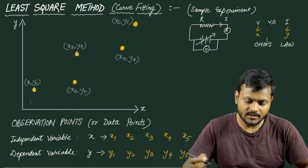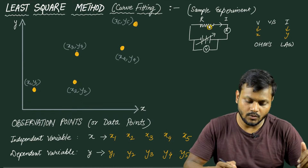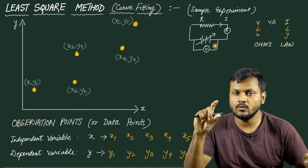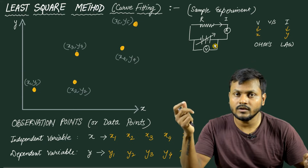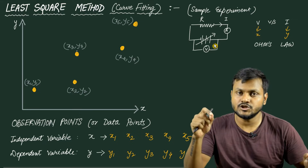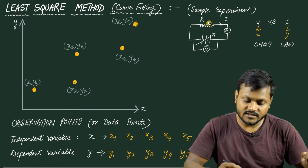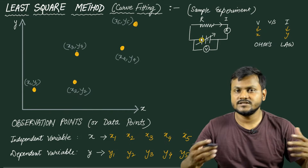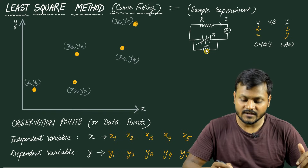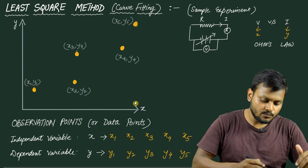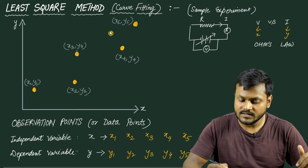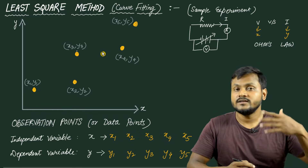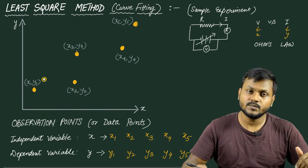Let's suppose that you perform an experiment which involves a resistance connected to a battery and then you change the voltage of the battery. Let's suppose first you take 1 volt, then 2 volt, then 3 volt, and so on, and with each voltage you measure the current. Here in this resistor circuit the ammeter measures the current and the voltmeter measures the voltage. You gather a set of data points by changing voltage and finding the current, and then you plot them in a graph where voltage is the x-axis and current is the y-axis.